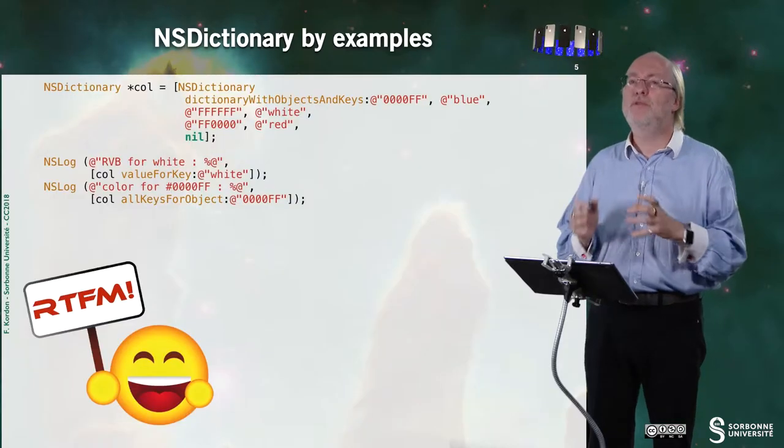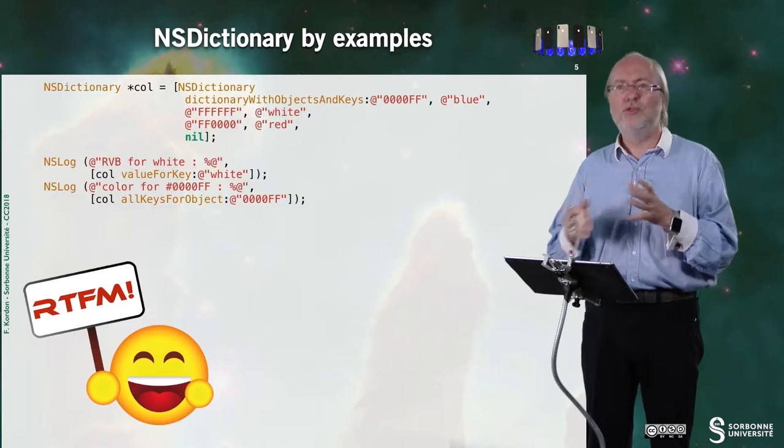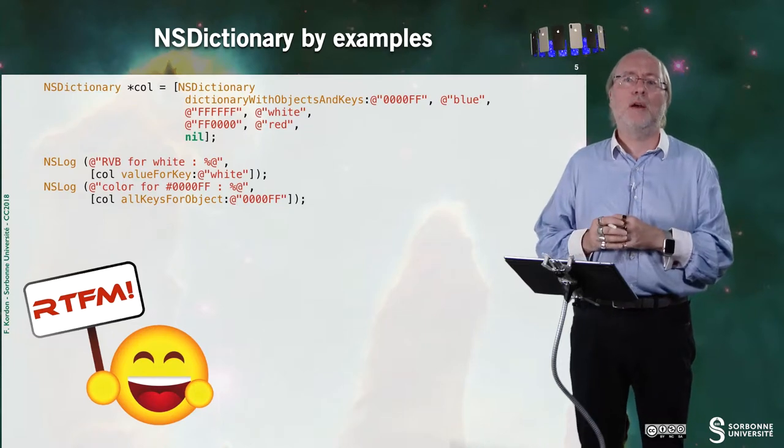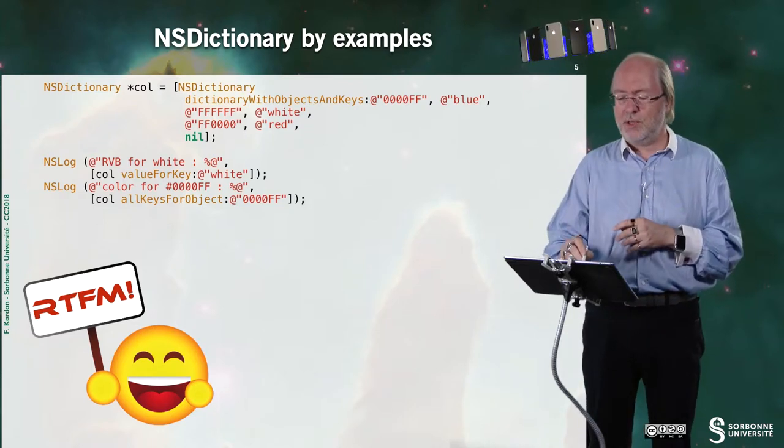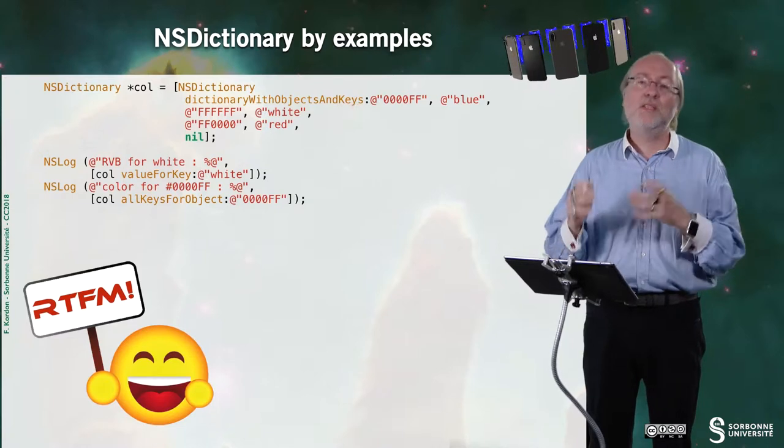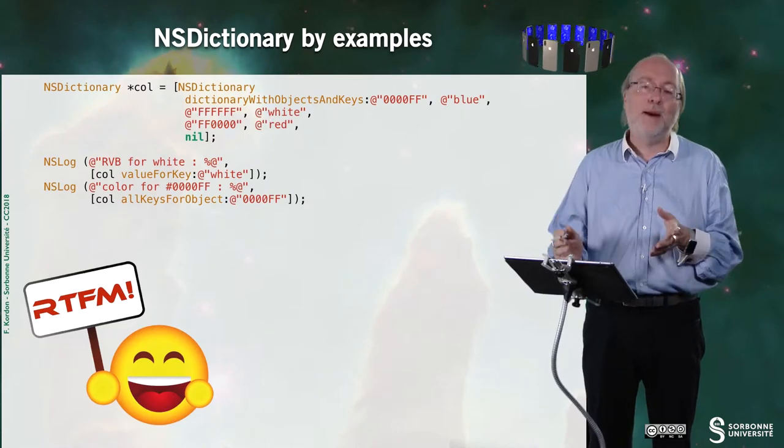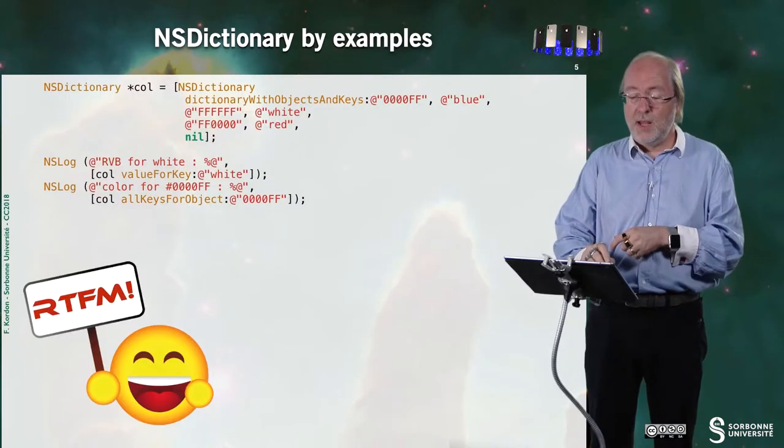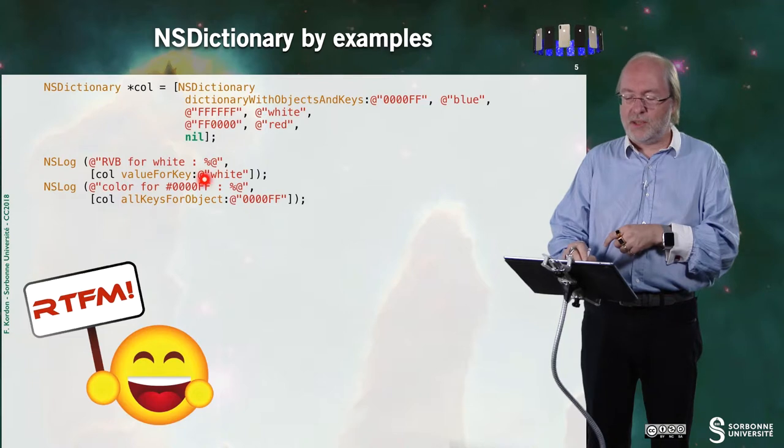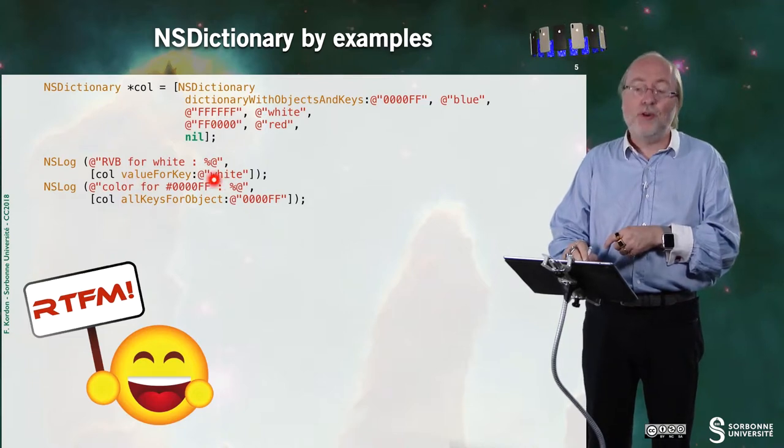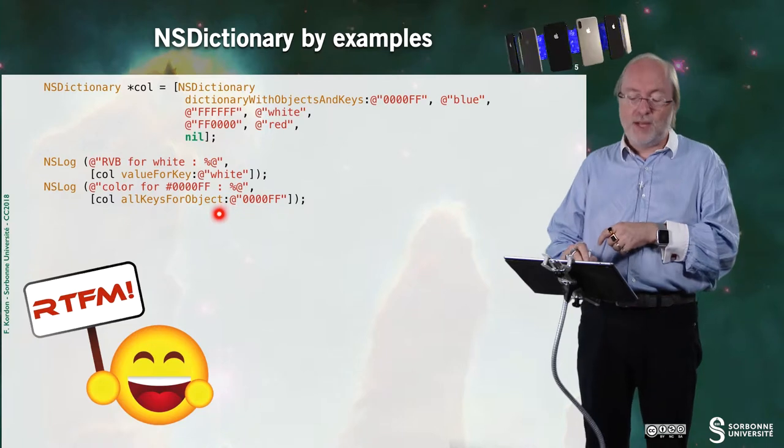Let's now have a look at NSDictionary. So NSDictionary is very useful and used basically by some of the iOS framework. So here, once again, dictionary with objects and keys. So this is a class method. And here I just have couples of values and the binary. And of course, I must have an even number of values. Here you can see that some access, value for key, or key for objects.